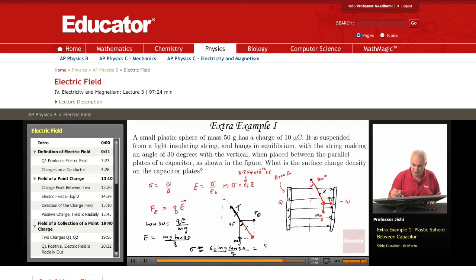Epsilon 0 is 8.854 times 10 to the minus 12. M is 50 grams, so that's 50 times 10 to the minus 3. Tangent 30 is 1 over root 3. And Q is 10 micro coulombs, so that's 10 times 10 to the minus 6.